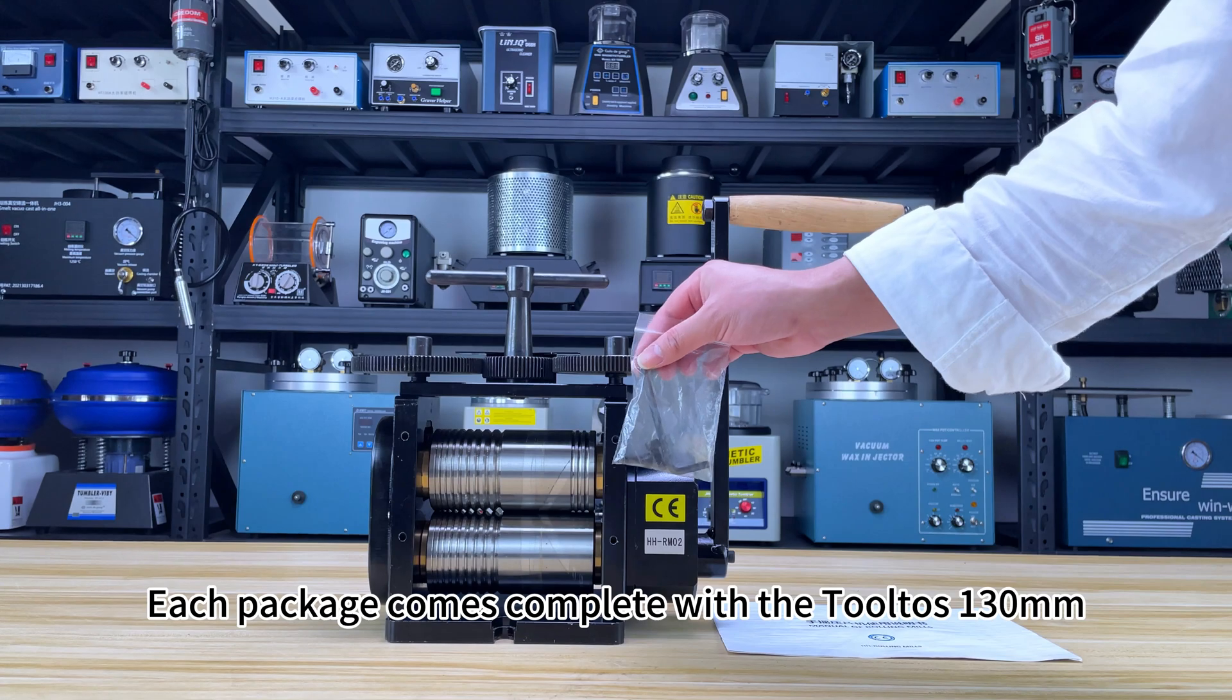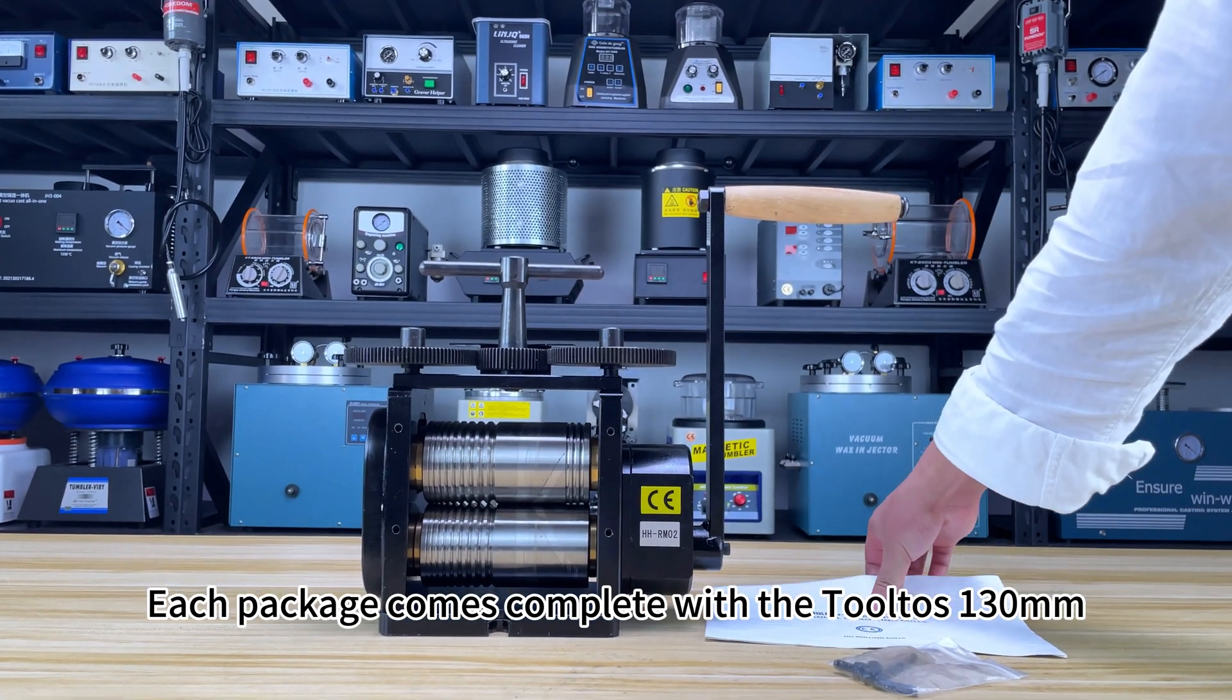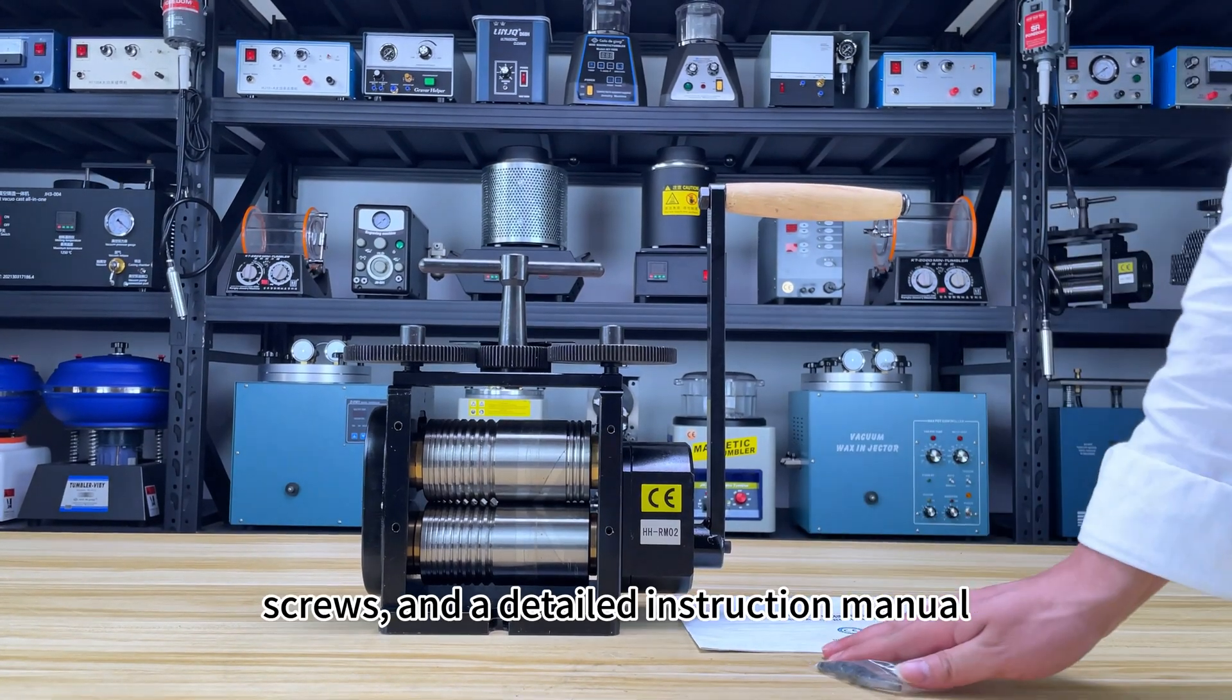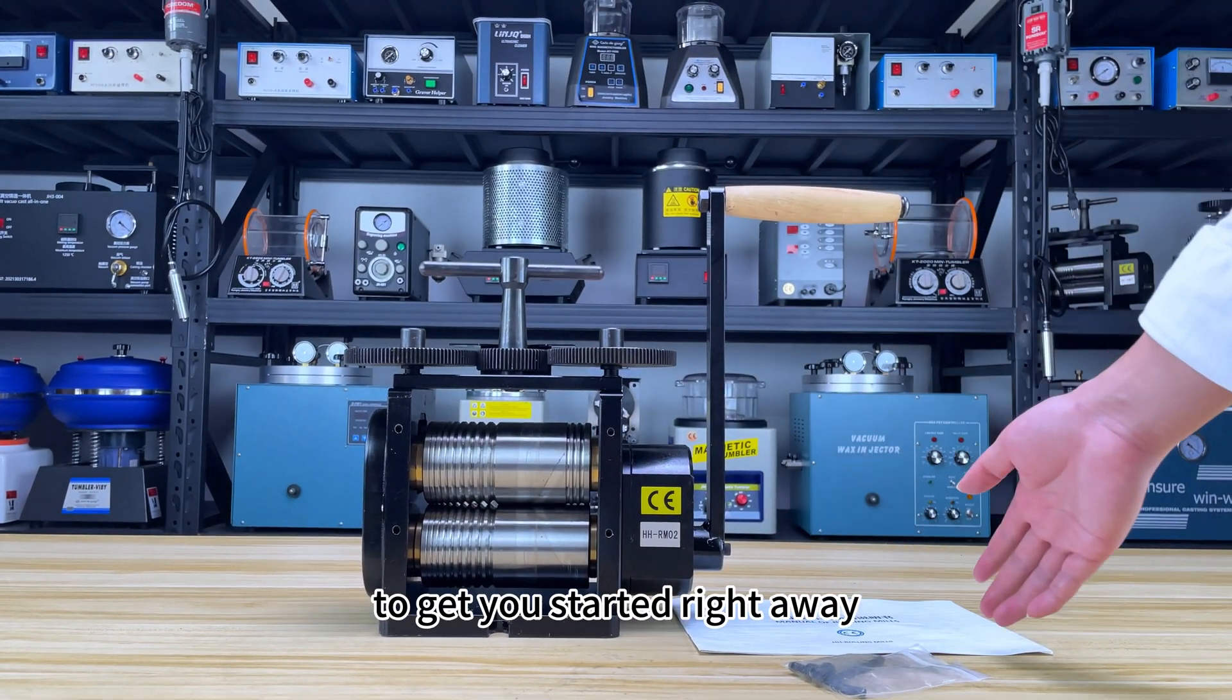Each package comes complete with the Tolto's 130mm rolling mill machine, hand grip, fasteners, screws, and a detailed instruction manual to get you started right away.